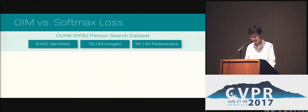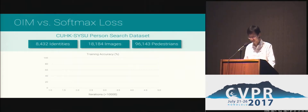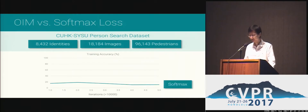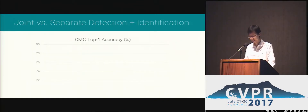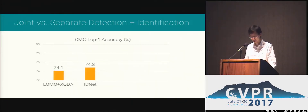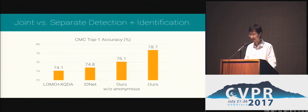To validate our approach, we collected a new person search dataset with more than 8,000 identities. On this dataset, the training accuracy using Softmax loss sticks at around 15%, while using OIM loss, the accuracy increases normally and the whole network can be trained properly. We also compare our joint framework with baseline methods that do detection and identification separately. The baseline results are around 74% accurate, while our method without anonymous people is 76%, and it is even 2.6% better with anonymous people included.